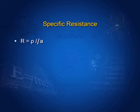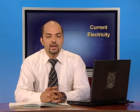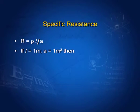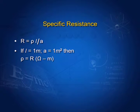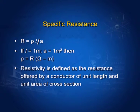Specific resistance: from R = ρL/A, if we take length L = 1 meter and area of cross section A = 1 meter squared, then ρ = R ohm-meter. So resistivity is defined as the resistance offered by a conductor of unit length and unit area of cross section.